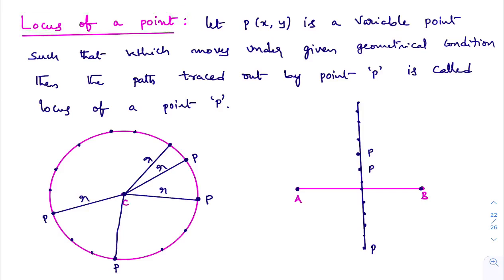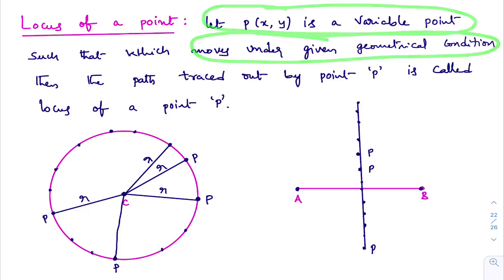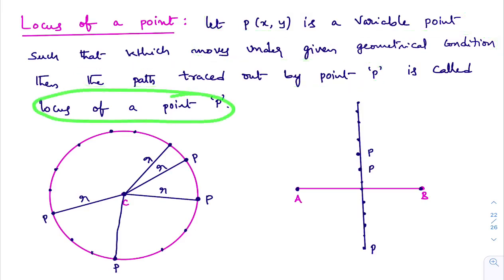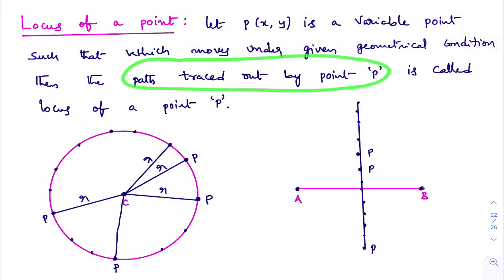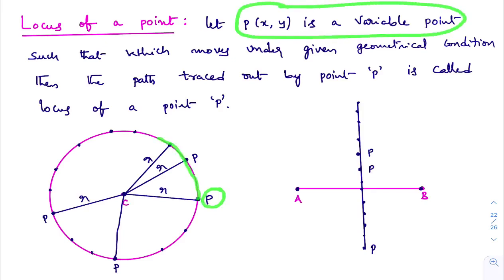See what we learned in previous class: P is a variable point which moves under a geometrical condition — P is a point which moves based on the given geometrical condition. Then the path traced out by the point P is called the locus of point P.